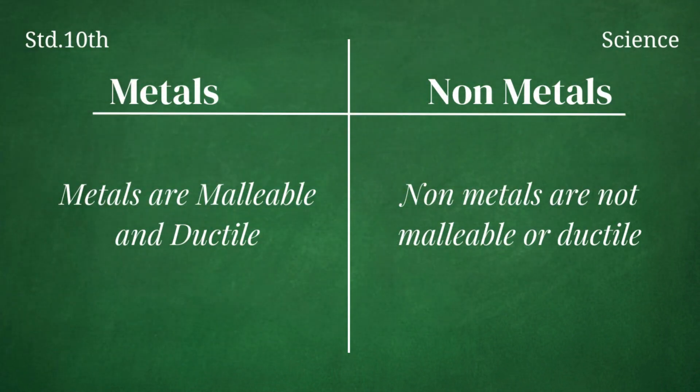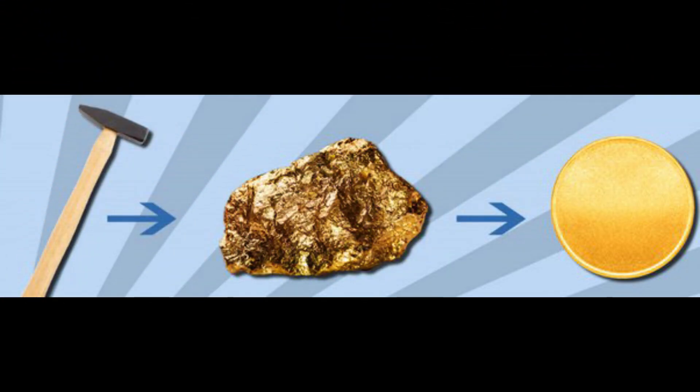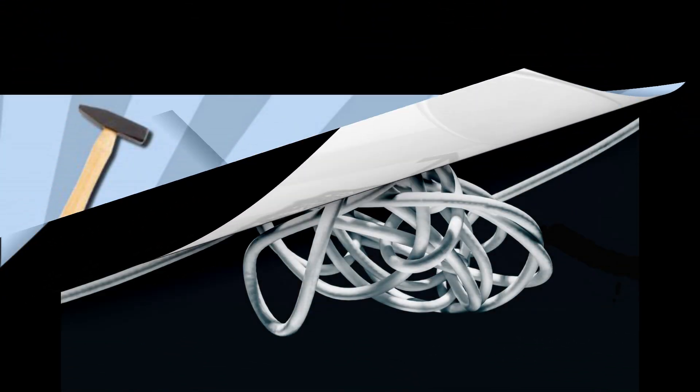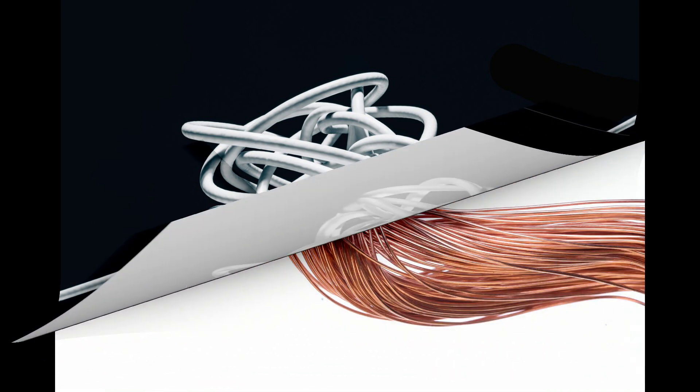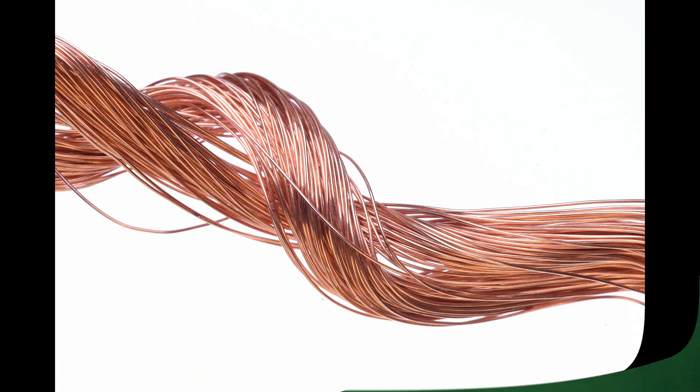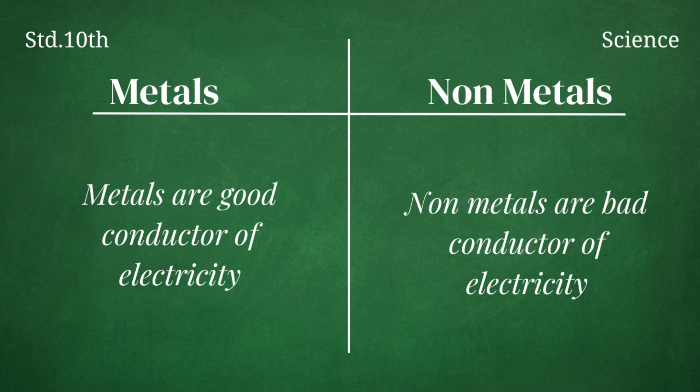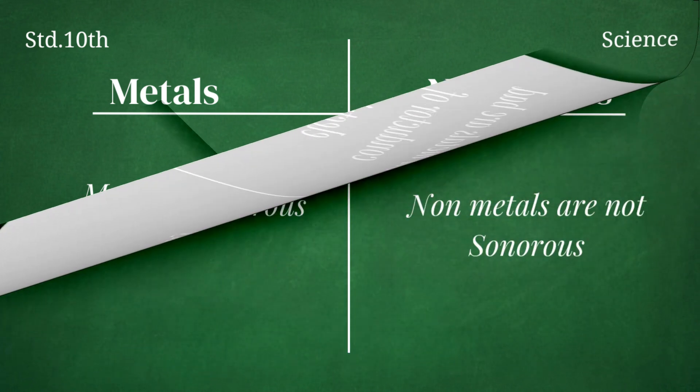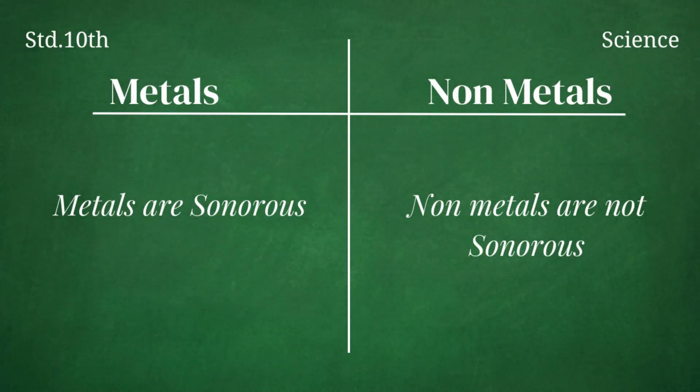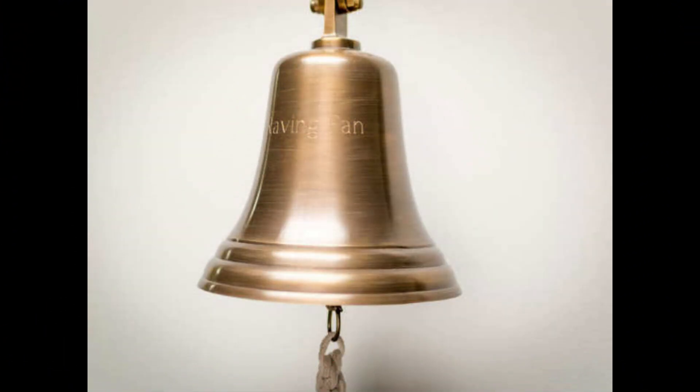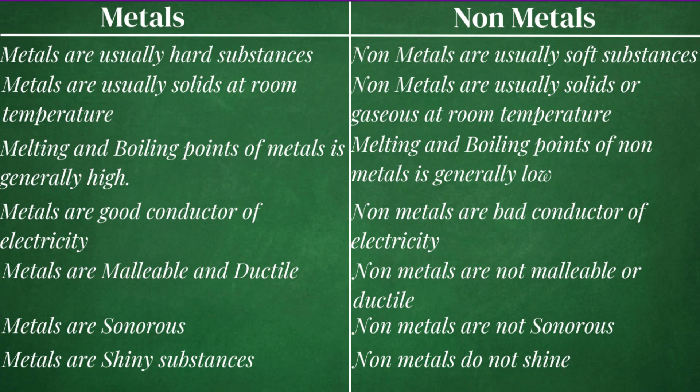Metals are malleable and ductile, means they can be converted to sheets and wire, while non-metals are not malleable or ductile. Metals are good conductor of electricity but non-metals are not at all the good conductor of electricity. Metals are sonorous, means they produce sound, while non-metals are not at all sonorous. Now these were the differences.